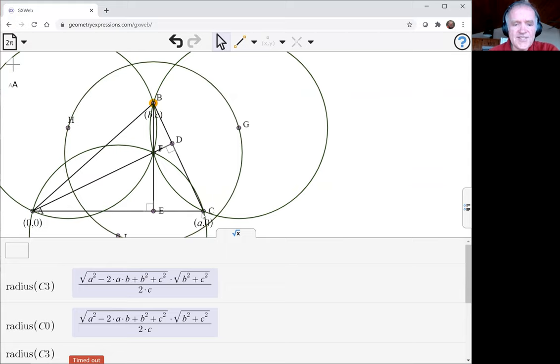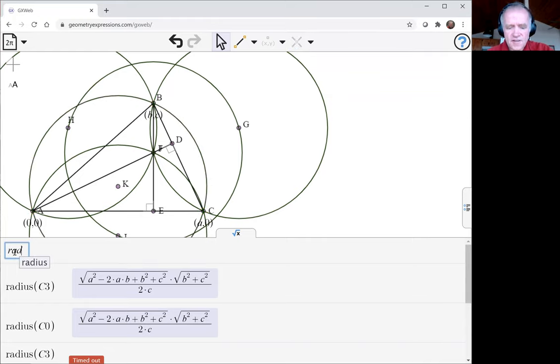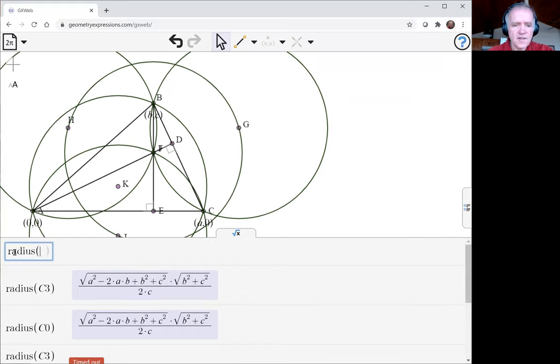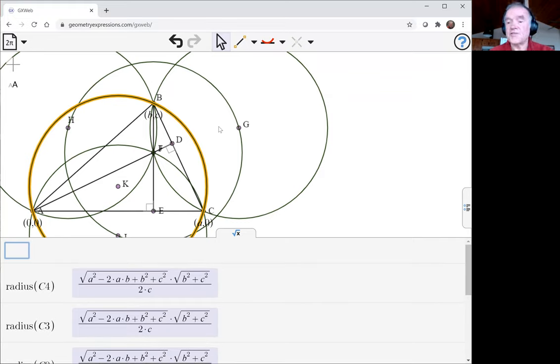If we create the circumcircle of the original triangle, we can see that this also has the same radius. So a lot of circles have the same radius.